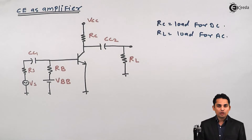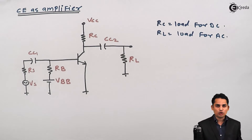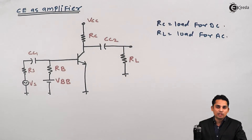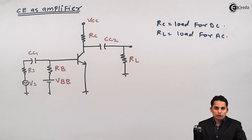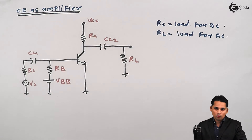In DC analysis, we will get a graph of a line called the DC load line, which consists of all possible combinations of IC and VCE. We know that IC and VCE are our Q point coordinates. This line will give us the idea of where the Q point should be on the DC load line, or in the active region. For that, we need to apply KVL to the output loop.